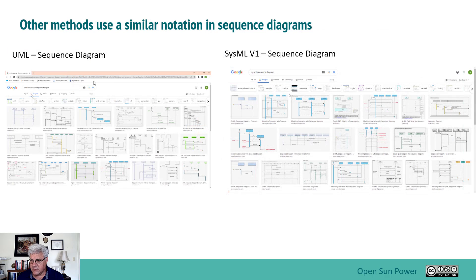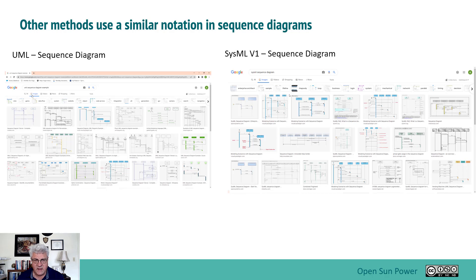Other methods have a very similar notation. UML has something called a sequence diagram, and SysML V1 also has a sequence diagram — pretty much identical in how you would use it. The key difference is that this diagram has a lot of content shared by other diagrams, and you can leverage that content to basically do an initialization of the diagram.